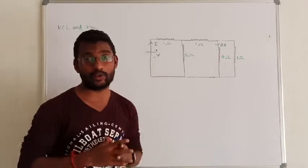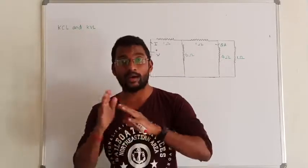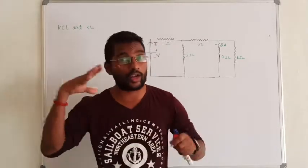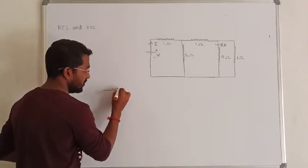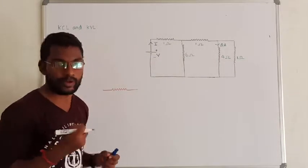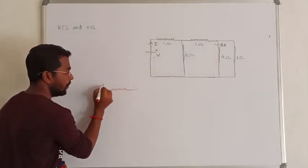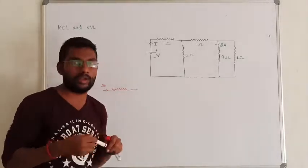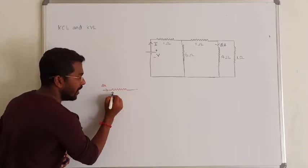First, you can apply the same thing to active elements and passive elements. We apply the current entry point and leaving point. For a passive element, observe the same thing: if your current direction enters at 2A, and you want to see the resistance, the resistance will be plus at the entry point and minus at the leaving point.